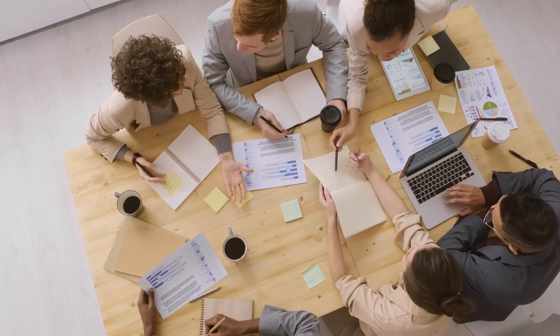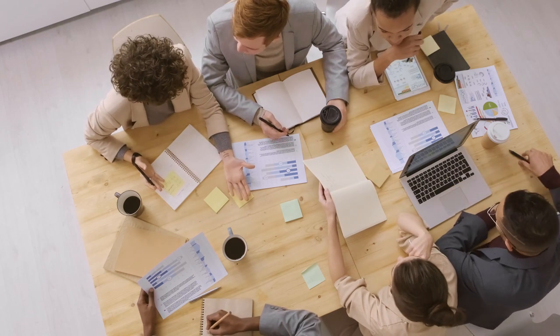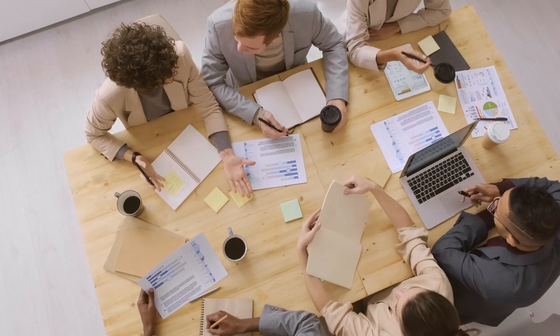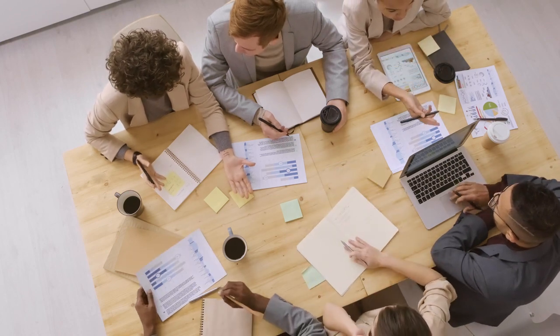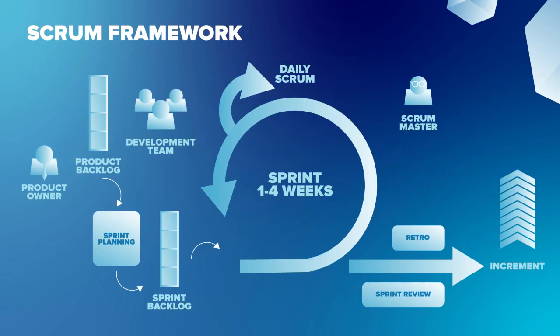First of all, we have to understand what is the Scrum framework and what is the concept of Definition of Done. Scrum is basically an agile-based project management framework for software development in which we divide the work into multiple chunks called sprints. In each sprint we plan, develop, test, and apply tasks. At the end of the sprint we have a product increment, which is basically the task completed during the sprint.